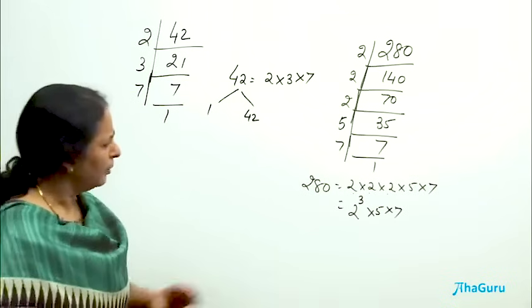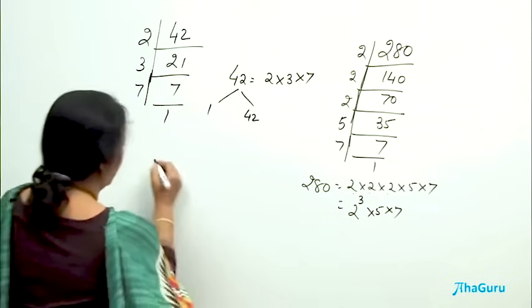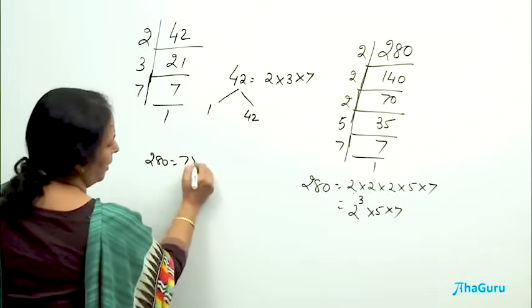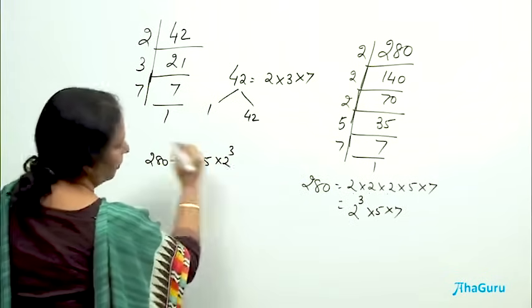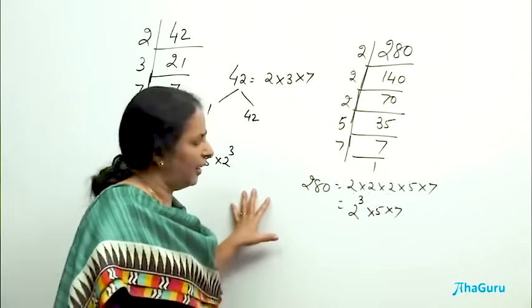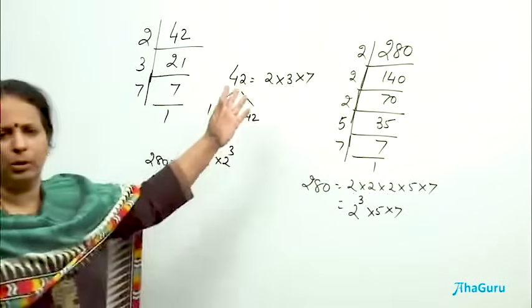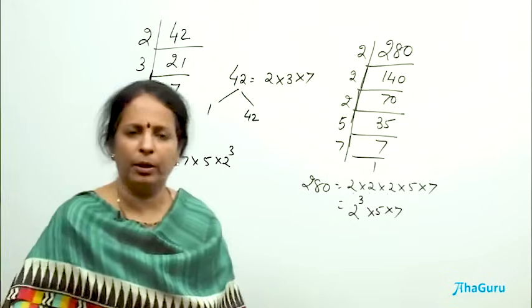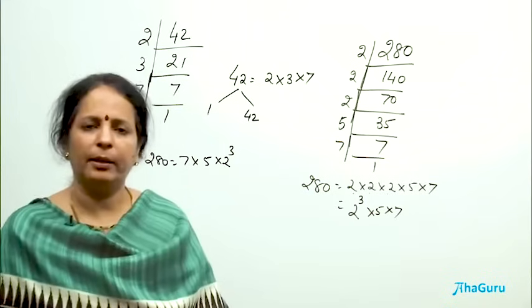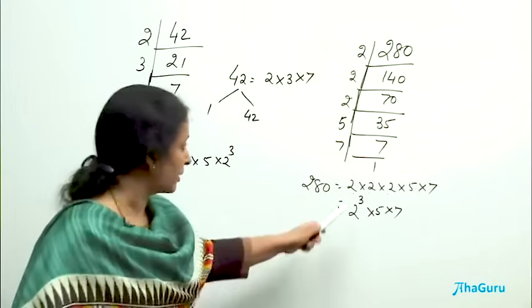Now what is more important is you can change the order. If I do not want to write in this order, I can write 280 is equal to 7 into 5 into 2 to the power 3. Nothing wrong in that. So finally we see that every composite number like 280, 42 or for that matter any composite number you can think of can always be written as the product of its prime factors. They are all the factors. This 2, 5, 7, they are all factors. Here 2, 3, 7, they are all factors.